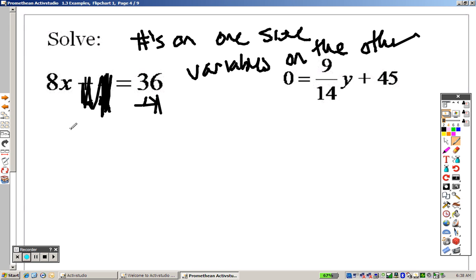So when I subtract that on both sides, I get 8x equals 36 minus 4, which is 32. 8 times x, I divide both sides by 8, that cancels out. I get x equals 4 as my answer.